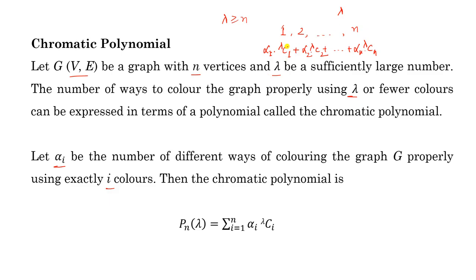The chromatic polynomial is written as sigma i=1 to n of lambda C i times alpha i. This is the chromatic polynomial for coloring the graph properly using lambda or fewer colors. This is one way, but in general we can also directly calculate the chromatic polynomial of a graph.